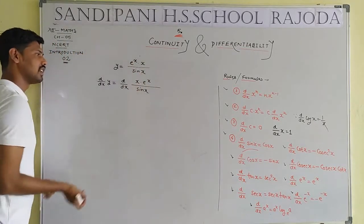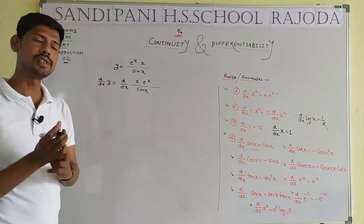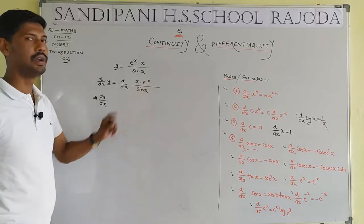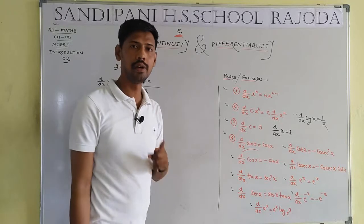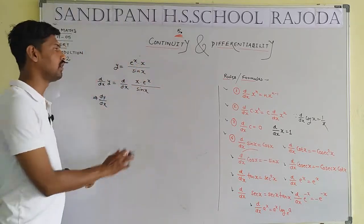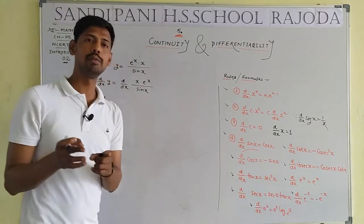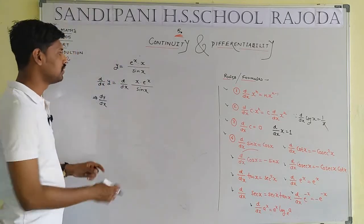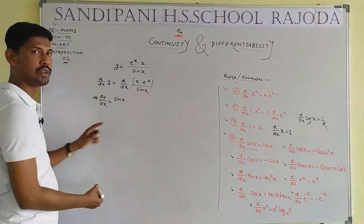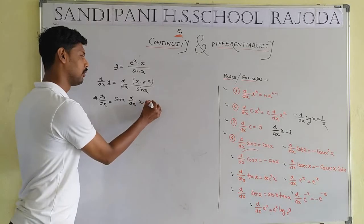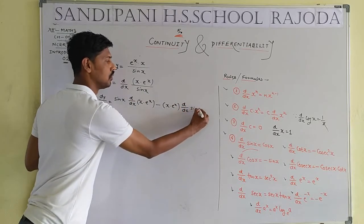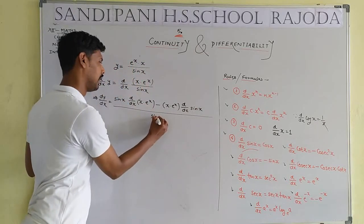Now solving another combined example. Here the numerator contains e^x · x and the denominator is sin x — so we have both multiplication and division. By BODMAS, we apply the division rule first. So we apply the quotient formula: [sin x · d/dx(e^x · x) − (e^x · x) · d/dx(sin x)] / sin²x.